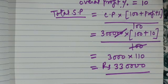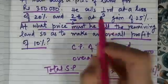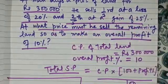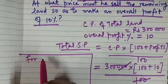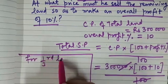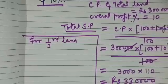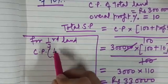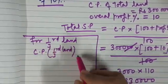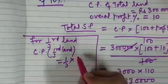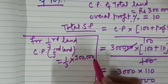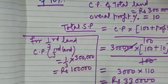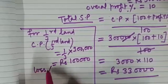Now, we will be using the information that he sells one third at a loss of 20 percent. For the one third land, let us write down what information we have in terms of mathematics. CP of one third land, what is that? 1 by 3 into 3 lakhs. That is rupees 1 lakh. Here loss percent is 20.